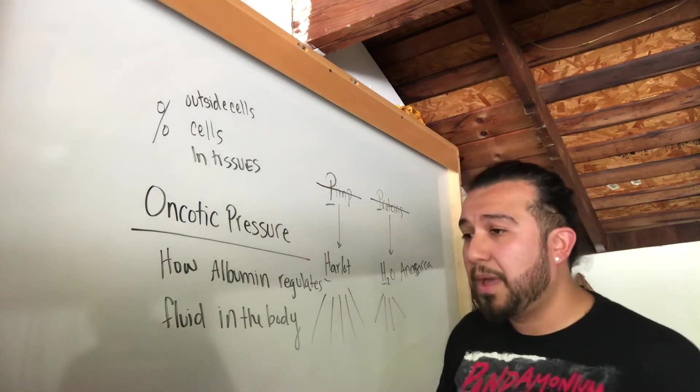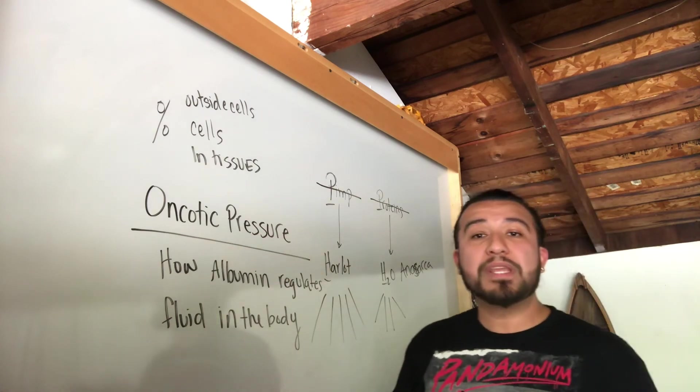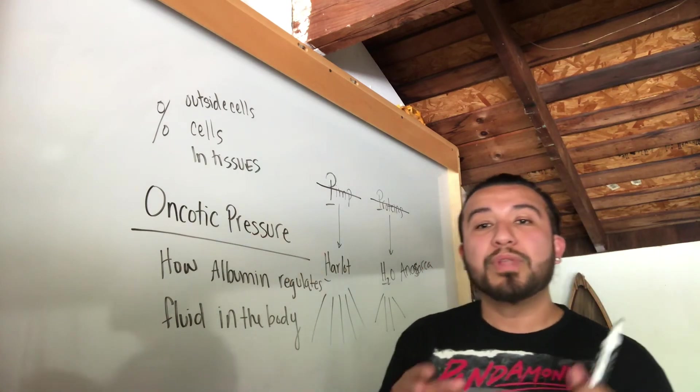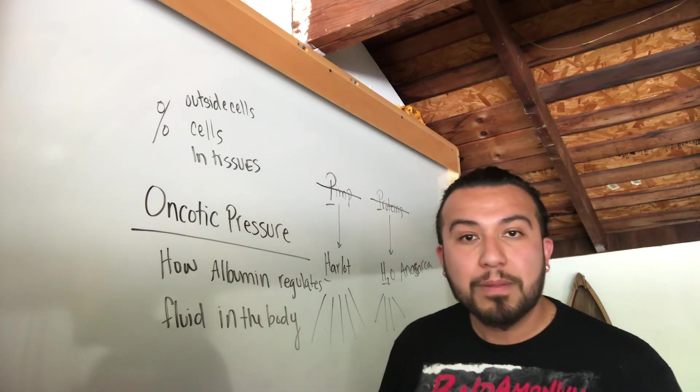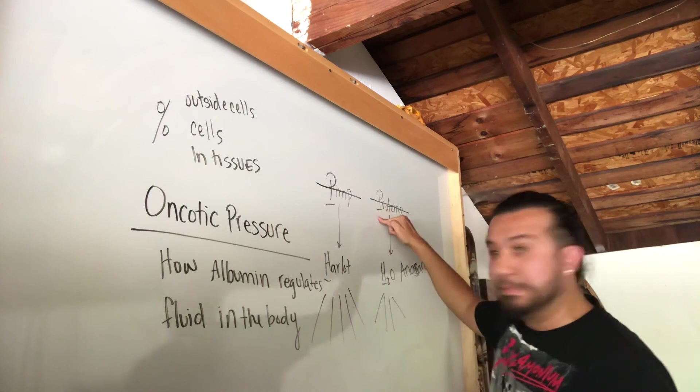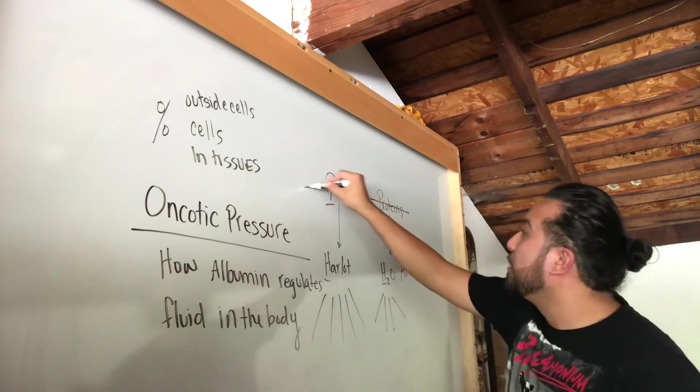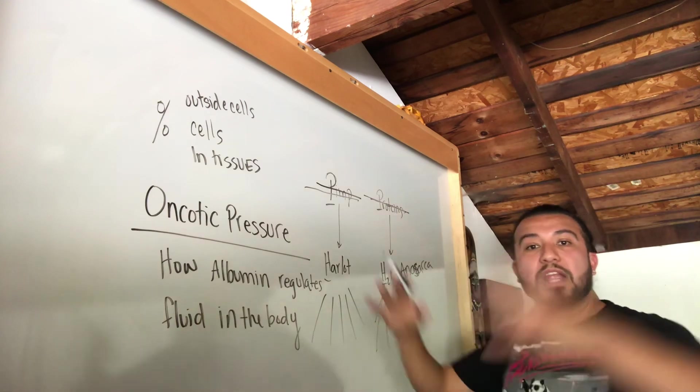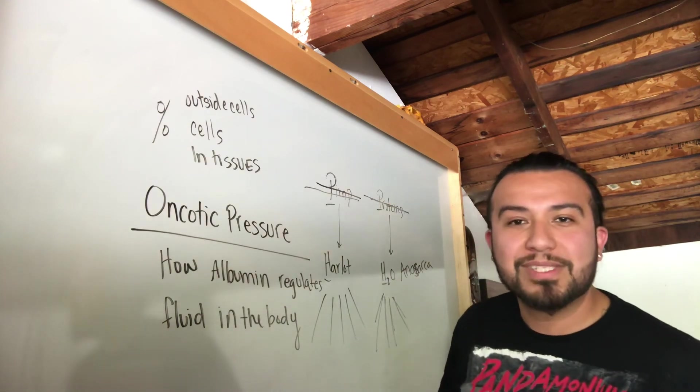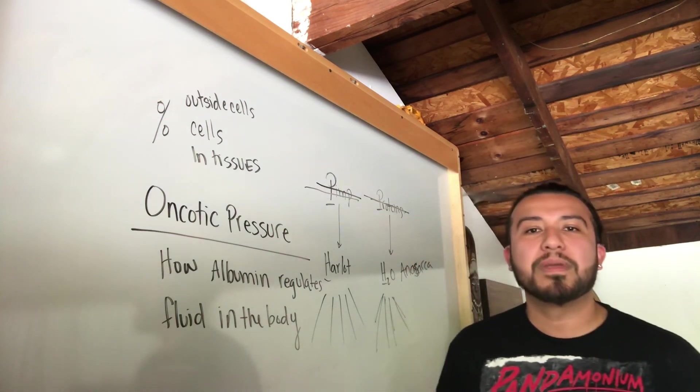And that's essentially how it works guys. So I hope you guys understand oncotic pressure now. Again for recap, oncotic pressure dictates where the fluid in the body goes. It's carried out by proteins, in particular albumin. And the protein tells the fluid where to go, just like the pimp tells the harlot where to go. When we lose the pimp, when we lose the proteins, the water or the harlot goes everywhere she wants or the fluid wants and that's how you develop anasarca guys. So I hope that helped out and there's more videos to come. Thank you.